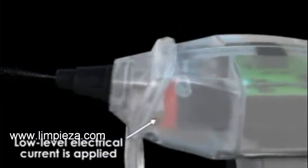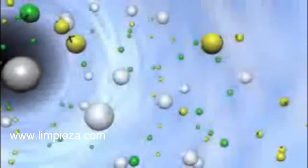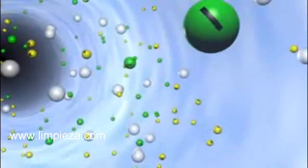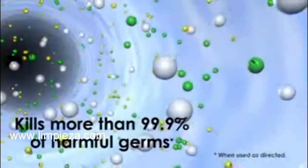Just before the water exits the nozzle, a low level electrical current is also applied to the water. With the water ionized, it is now ready to attract and break up the dirt and oil as well as kill harmful bacteria.